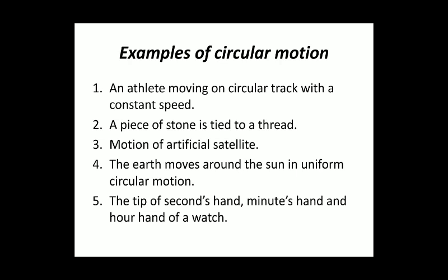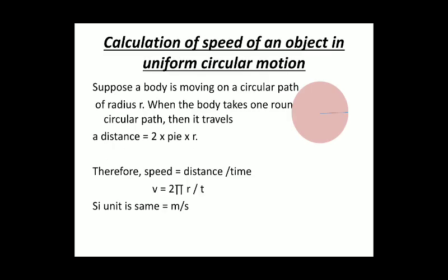Just now we have discussed about the different examples of circular motion: an athlete moving on circular track with a constant speed, a piece of stone tied to a thread. Many of you have played in your childhood. You just tie anything on a thread at one end and then you keep on moving it. And if you leave it, where does it go? It goes out in a straight line. Similarly, motion of artificial satellites, the earth moves around the sun, tips of your second hand, minute hand and hour hand of a watch.